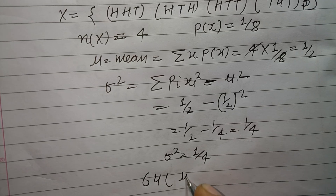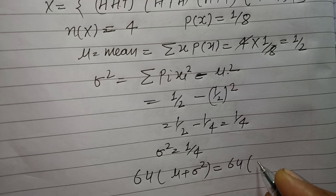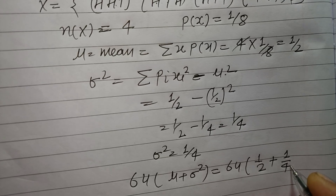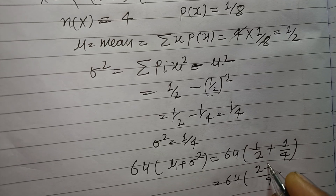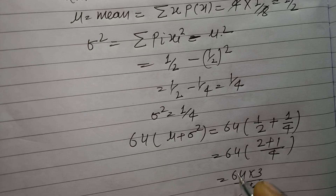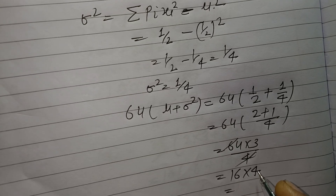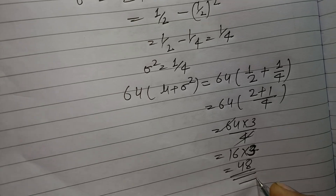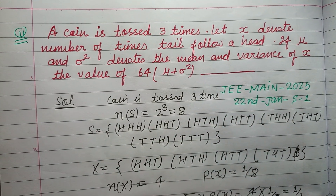The question asks for 64 times mu plus sigma square. So 64 × (1/2 + 1/4) = 64 × (3/4) = 48. So 48 is the correct answer to this question. I hope you got it — please like the video, subscribe to the channel, thanks for watching.